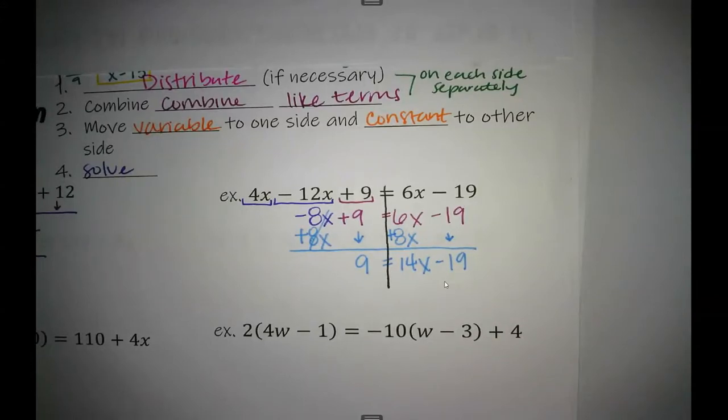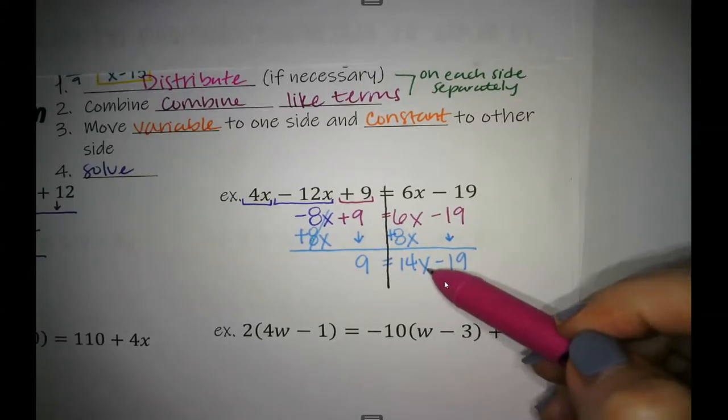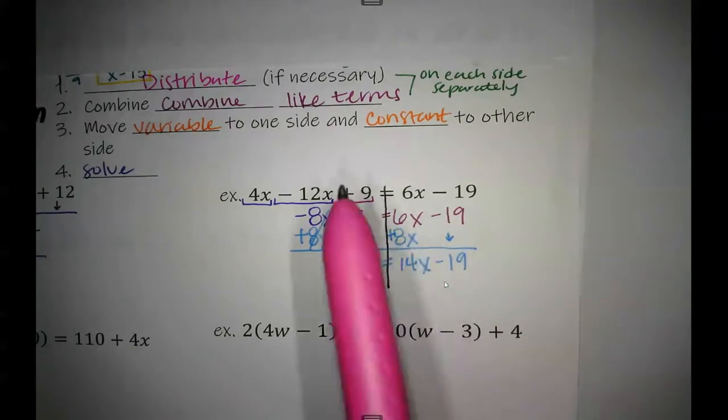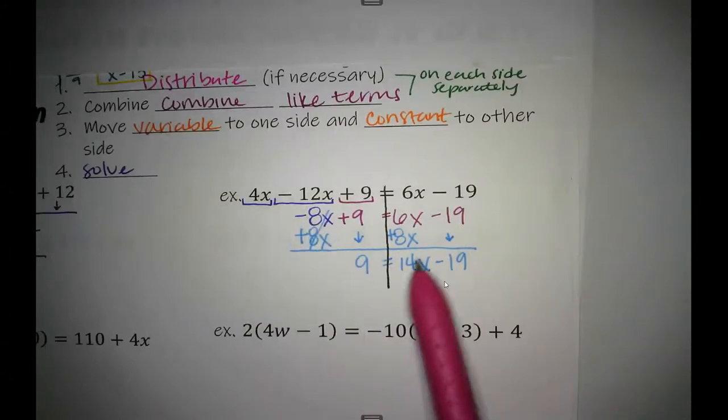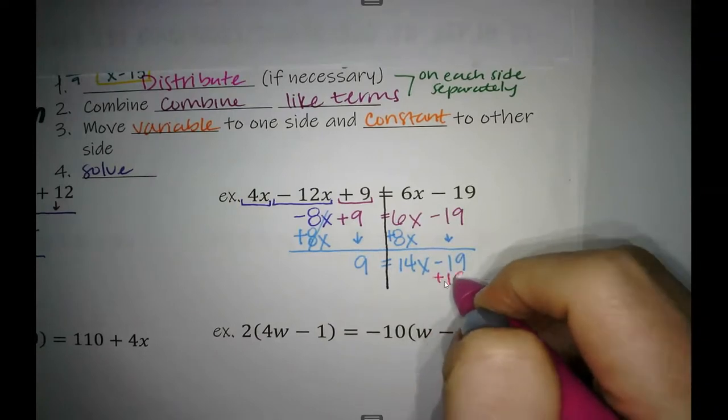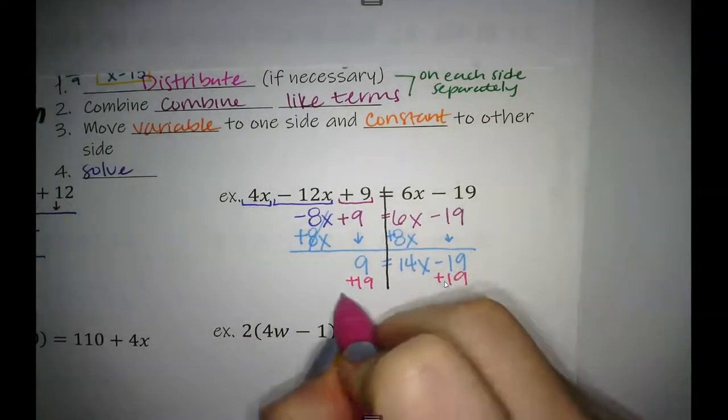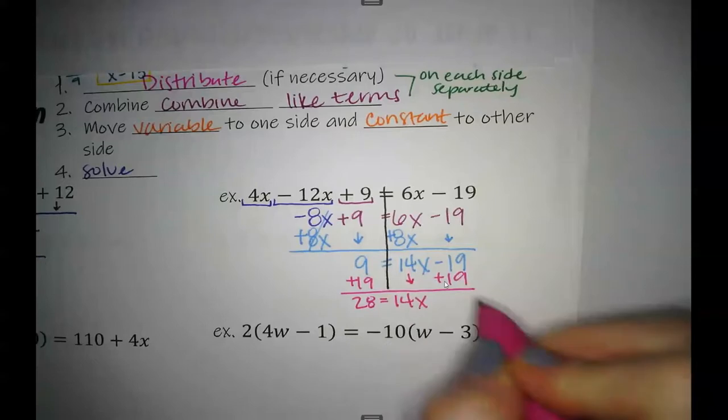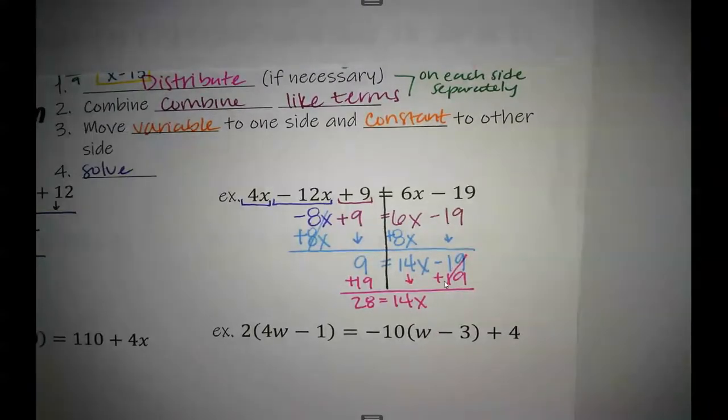So now I'm just solving a two-step equation. Still trying to get my x right here. When I've got the variable on both sides, whatever side I decide to move it to, that's where it stays. I don't move that x any more times. Now I'm just dealing with anything being added or subtracted to it, and then multiplied and divided by it. So I'm going to add 19 to both sides. 9 plus 19 is 28. Now that 14x stayed there and stayed the same, and that minus 19 plus 19, that all goes away.